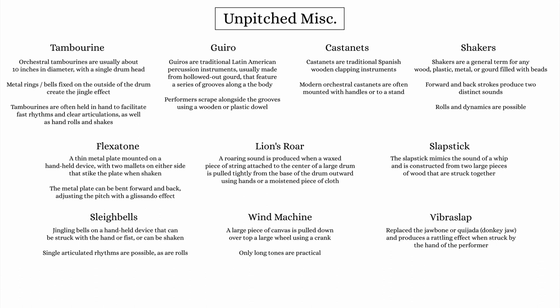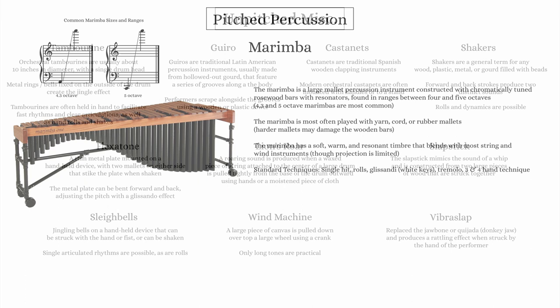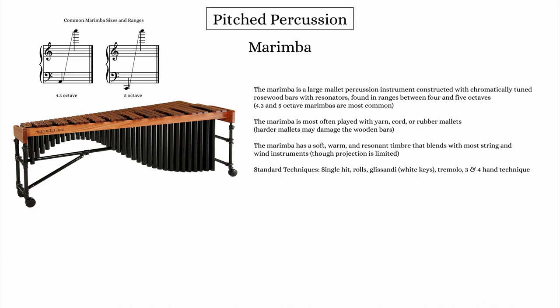Now I'll look at pitched percussion, starting with the marimba. The marimba is a large keyboard-like mallet percussion instrument made with chromatically tuned rosewood bars, each with a resonator tube below. Marimbas come in sizes of four and a third octaves or five octaves in range. They are played with yarn, cord, or rubber mallets — anything heavier can damage the wood. The overall timbre is soft and warm, and it blends nicely with most instruments, though it doesn't project well in thicker orchestral textures. Using two mallets per hand is possible, and advanced players can perform arpeggios, rolls, and tremolos using four mallets.